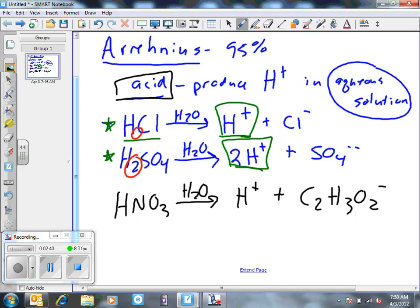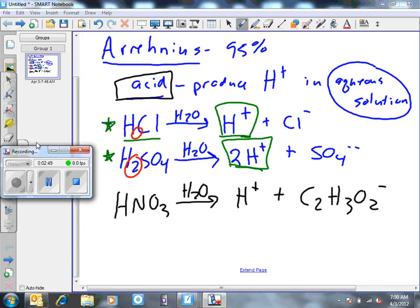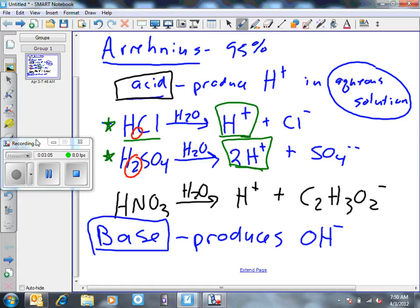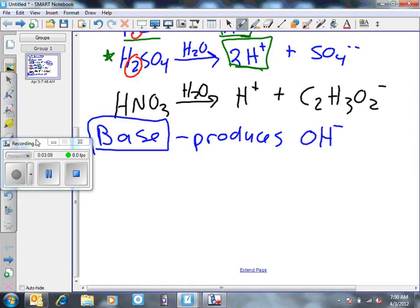To give you a definition for Arrhenius base, that is going to be similar. But in this case, it's going to produce, 95% of the time, the definition will work for this, produces hydroxide ions. So I'll give you a couple examples of that.